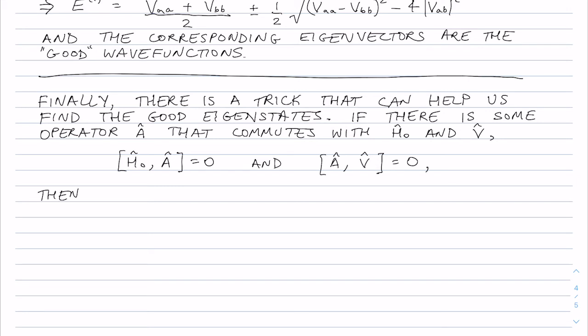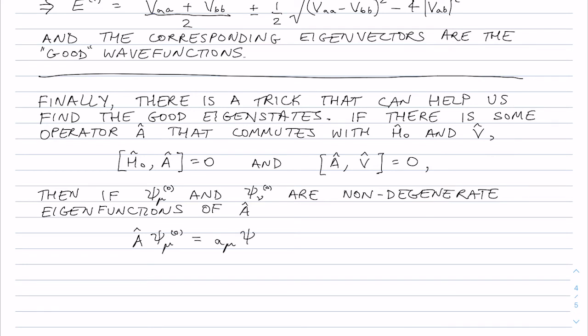Then if our good eigenstates psi mu and psi nu are eigenfunctions of A, i.e. we have A psi mu naught is equal to a_mu, so that's some eigenvalue a_mu times psi mu naught.